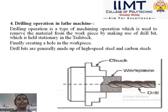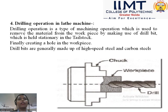The fourth operation is drilling. Drilling is a type of machining operation used to remove material from the workpiece by making use of drill bits, which are held stationary in the tailstock. Unlike the tool post where a single point cutting tool is used for many operations, drilling requires the tailstock. The main purpose of the drilling process is to make holes of a desired diameter on the workpiece.